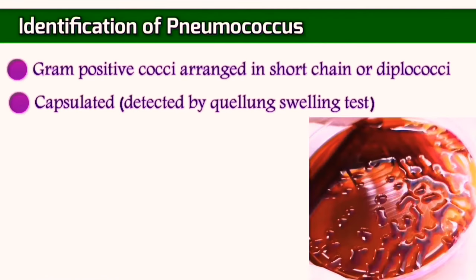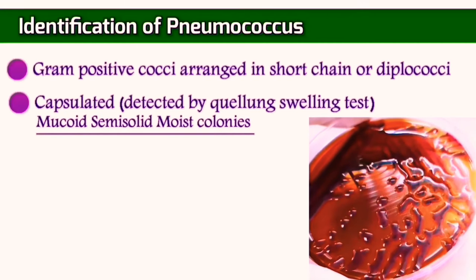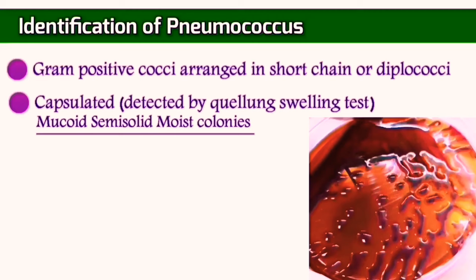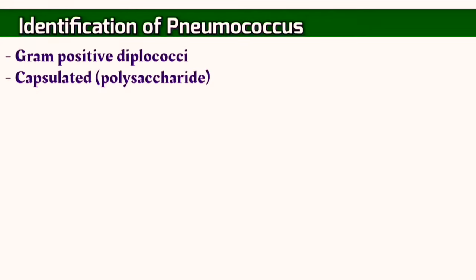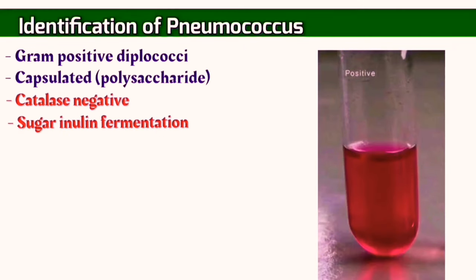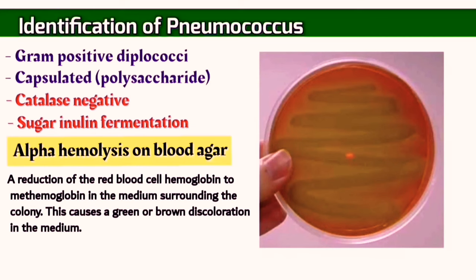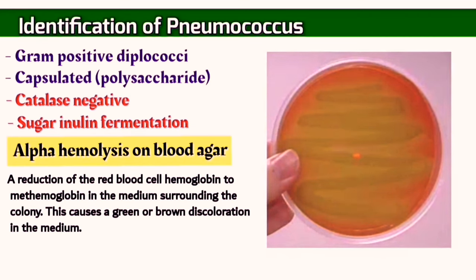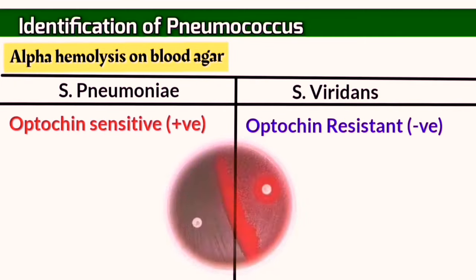All capsulated bacteria have a very unique appearance on the agar — the colonies look shiny and semi-solid with a moist and mucoid texture. Like all Streptococci, the Strept pneumoniae is catalase negative, and in contrast with the rest of the Streptococci, the Strept pneumoniae is inulin fermenting. You can differentiate between the Strept pneumoniae and Strept viridans, which is also alpha-hemolytic, by the optochin sensitivity test. The Strept pneumoniae is sensitive while the Strept viridans is resistant.